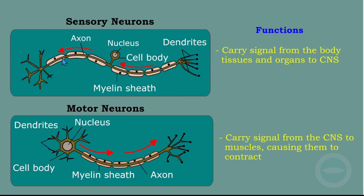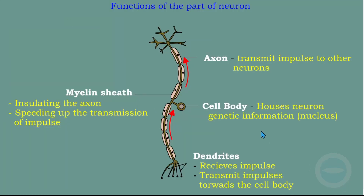In the next part, I will explain the functions of each part of the neuron. We have the myelin sheath — its function is insulating the axon, as you can see here, and also speeding up the transmission of impulses, making the impulse travel faster. Then we have the axon, which is the tube or pipe running inside — its function is to transmit impulses to other neurons.